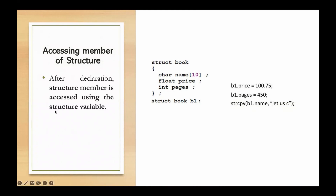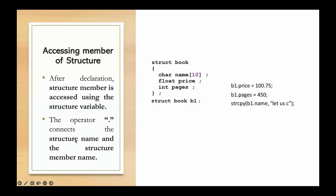After the declaration, the structure is accessed using the structure variable. The dot operator connects the structure name and the structure member name. So you use the object name, then the dot operator, then the member name to access particular data. For example, if you want to access the price, you use the structure variable followed by the dot operator and then the member name.